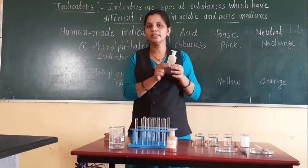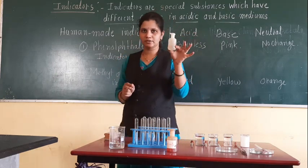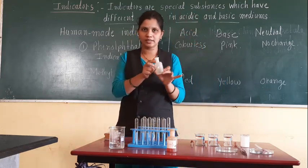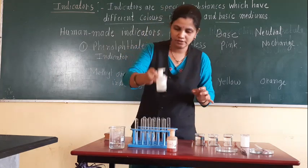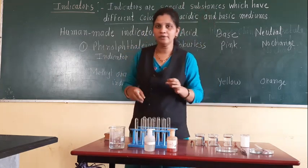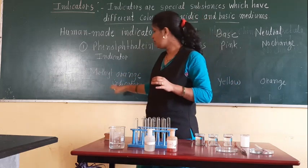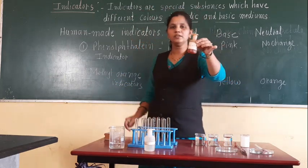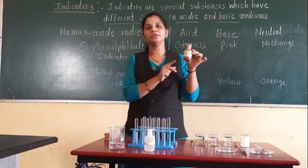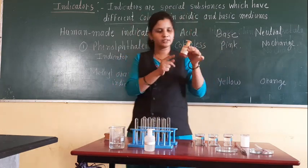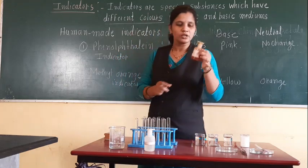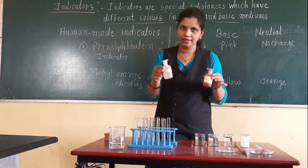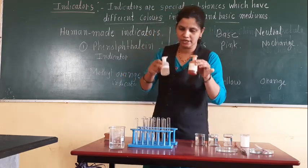The color of phenolphthalein indicator is colorless — there is no color in this indicator, so it is colorless. The other indicator is methyl orange, and its color is orange. So these two indicators — phenolphthalein and methyl orange — are human-made indicators.